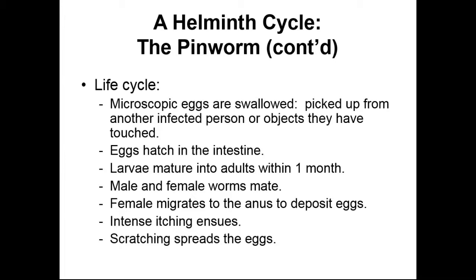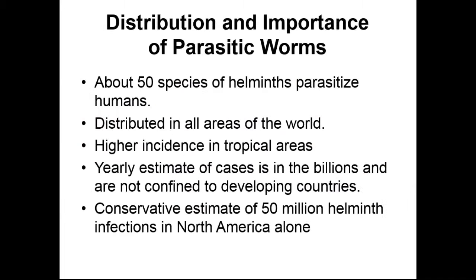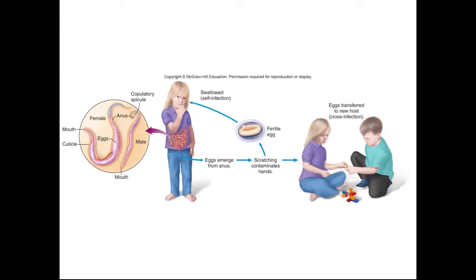Scratching the anus is the primary mode of egg spreading. Here we can see a larger female and a smaller male worm in the ascending colon. They form eggs, those eggs cause the child's anus to itch, she scratches and then spreads them, and a new host is infected once the other child puts their fingers in their mouth. If roundworms don't motivate you to wash your hands after going to the bathroom, I don't know what will.